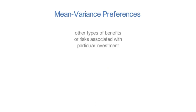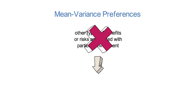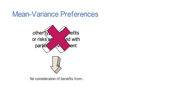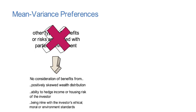I find it important to highlight that other types of benefits or risks that are associated with a particular investment are ignored by mean-variance preferences. So benefits that arise from a positively skewed wealth distribution or from the ability to hedge income or housing risk of the investor or from being in line with the investor's ethical, moral, or environmental standards are not considered.